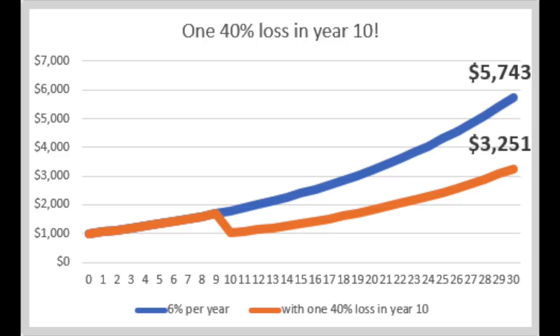Let me show you the importance of focusing on risk through numbers. $1,000 compounded at 6% for 30 years equals $5,743—not a bad return, almost six times your investment. However, just one hit of 40% in year 10 would set you back to $1,013 in year 10 and give you a total return of $3,251, or 44% less than without that one 40% portfolio hit. So one yearly loss of 40% destroys 44% of long-term returns.